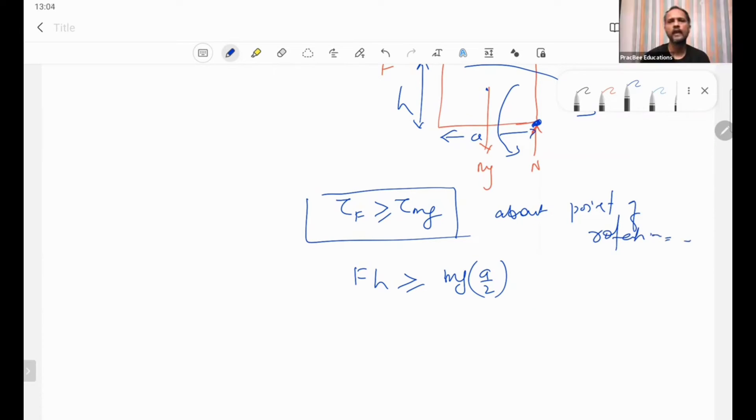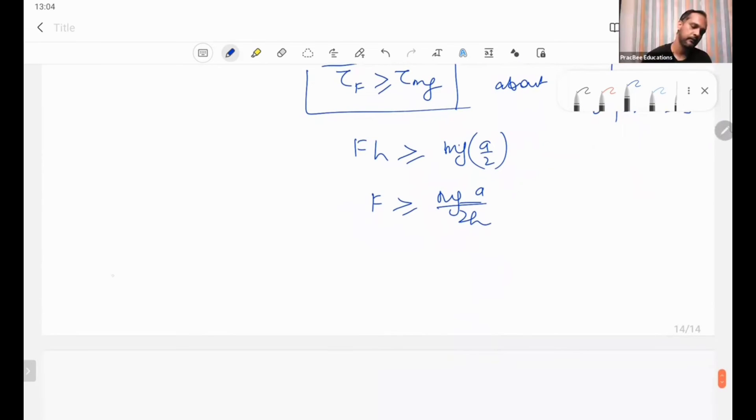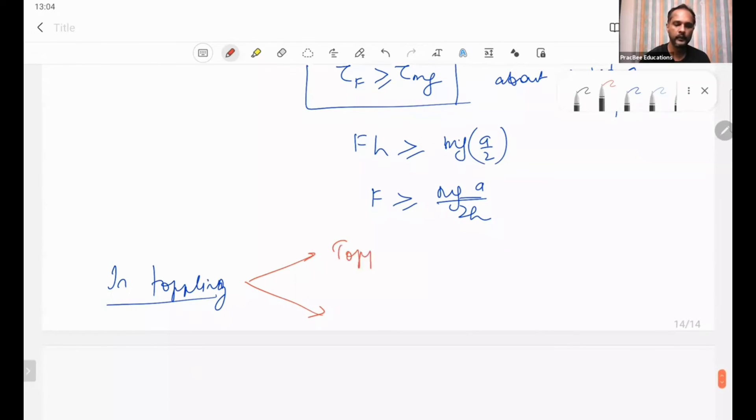Fine, so the value of F should be greater than mg a by 2h. If there are force, now there arises two conditions in toppling. There are two conditions. Condition one is toppling without slipping.